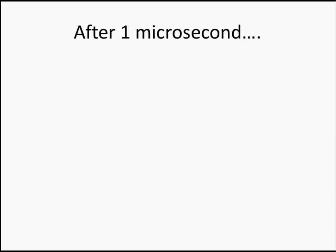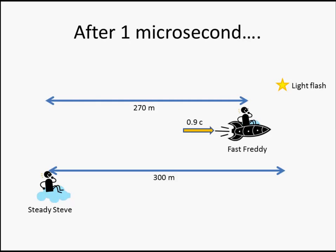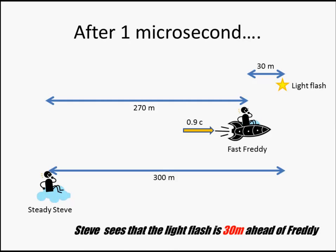After one microsecond clock tick, Steve sees the light that Freddy set off has traveled 300 meters. And he also sees, after the tick, that Freddy himself, who's traveling at 90% of the speed of light, has traveled 0.9 times 300, which is 270 meters. No problem at all with that. Steve sees that Fred has gone 270 meters in one microsecond, and the light flash has gone 300 meters, as expected, and everything makes sense. So, the light flash is 30 meters in front of fast Freddy.